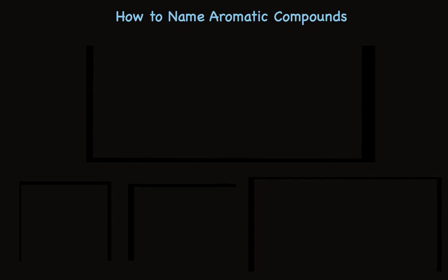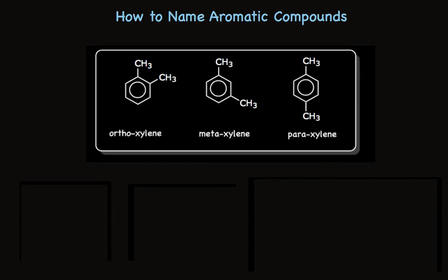There are three dimethylbenzenes — we call them xylenes. The ortho, meta, and para designations tell you the relationship between the two methyl groups. Ortho means adjacent carbons. Meta means there's one carbon between the two groups. And para is the designation for substituents that are directly opposite each other.